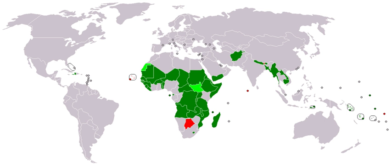76% of the 892 million people practicing open defecation in the world live in just seven countries. India is the country with the highest number of people practicing open defecation, followed by Nigeria, Indonesia, Ethiopia, Pakistan, Niger and Sudan. Sustainable Development Goal 6, established by the UN in 2015, calls for clean water and sanitation for all people, which is particularly relevant for people in developing countries.